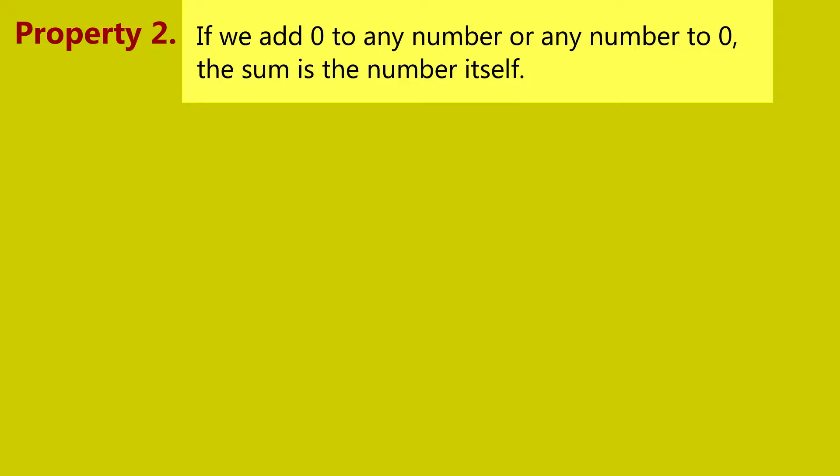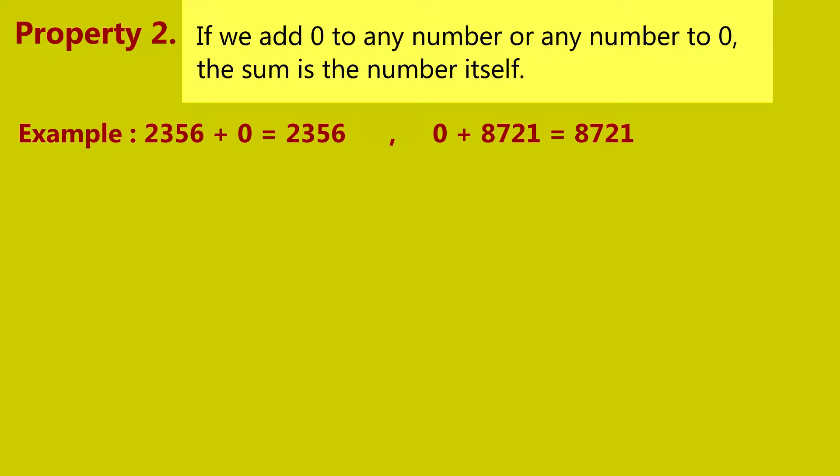Property 2: If we add 0 to any number, or any number to 0, the sum is the number itself. For example, 2,356 plus 0 is equal to 2,356. 0 plus 8,721 is equal to 8,721.